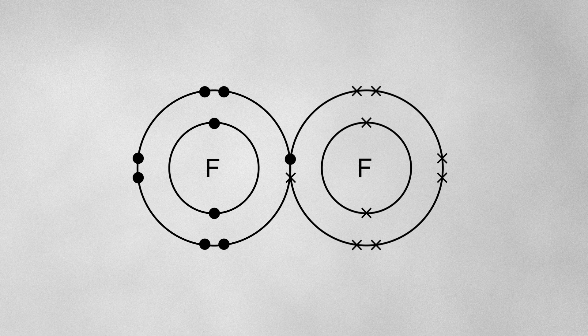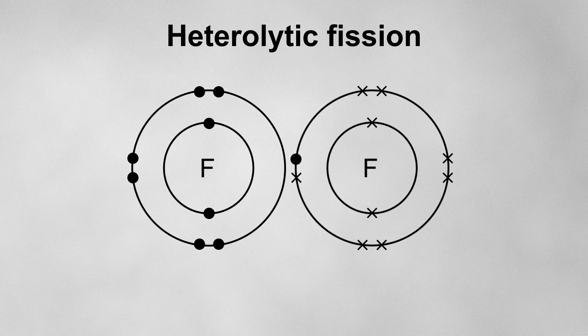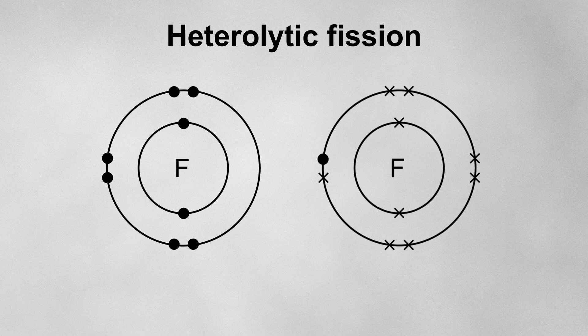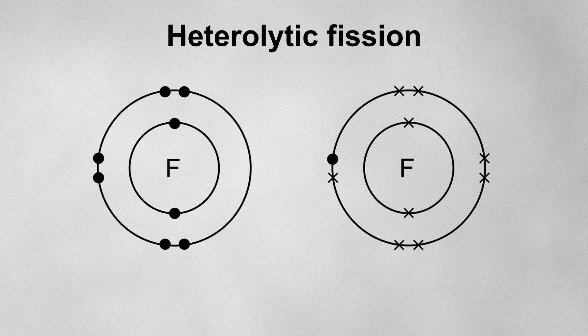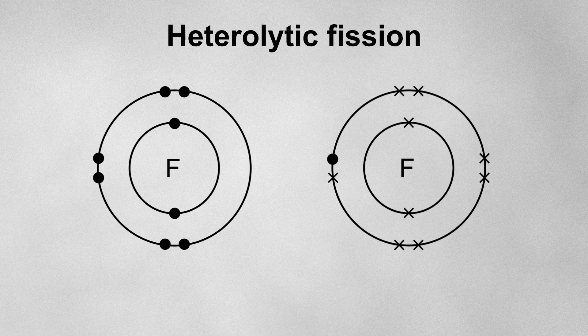When a bond breaks, it can happen in two ways. The first way is heterolytic fission. This is the most common form of bond breaking, where both of the bonding electrons go to one of the atoms, leaving a positively charged ion and a negatively charged ion.